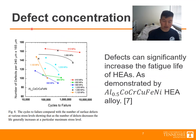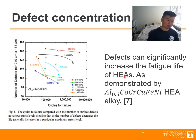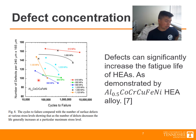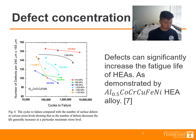We'll begin with defect concentration in high entropy alloys. Defects can significantly increase the fatigue life in high entropy alloys, as demonstrated by an aluminum, cobalt, chromium, copper, iron, nickel composition. The general trend seems to be that as the number of defects increases, the life cycle of the composition increases as well.